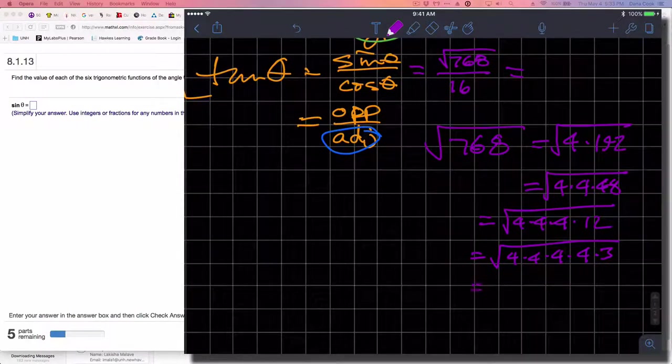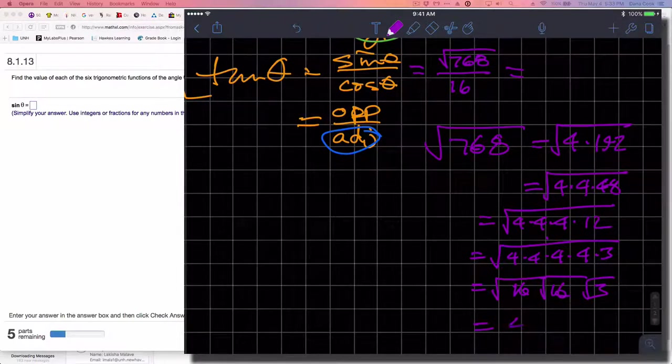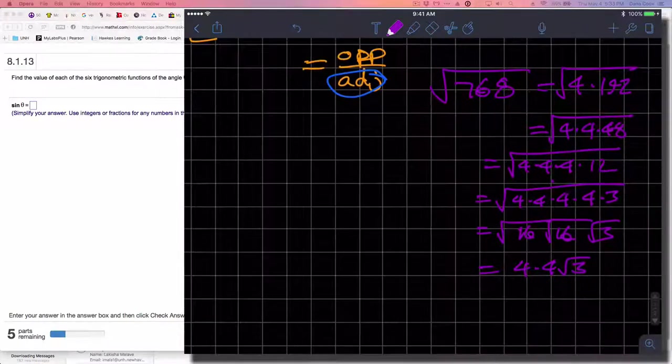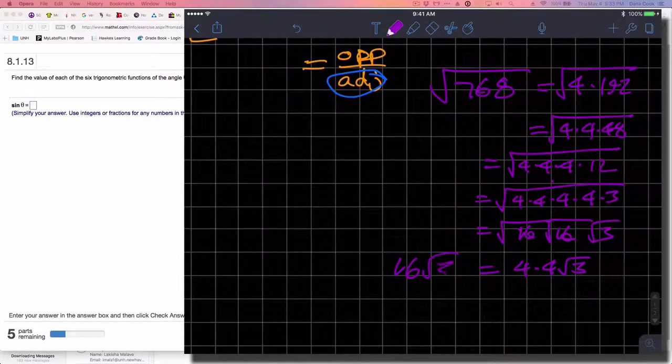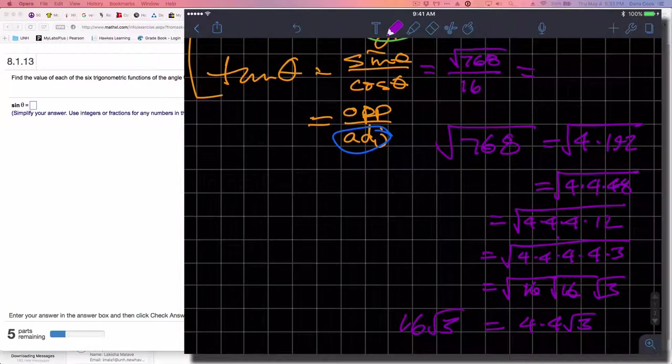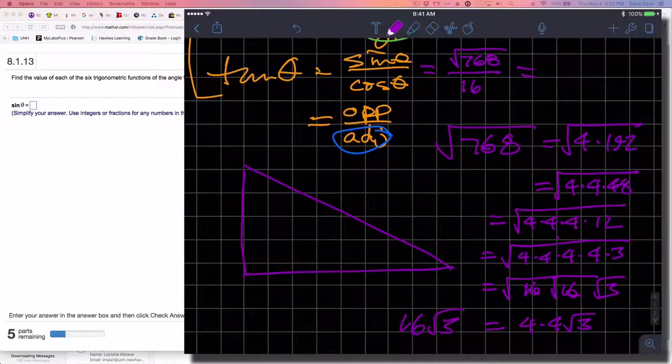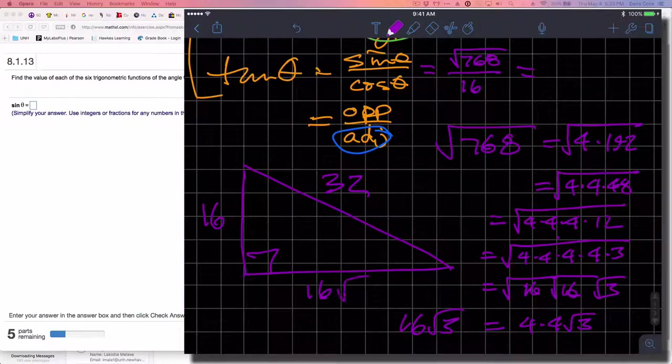This can be written as square root of 16 times square root of 16 times square root of 3. That's 4 times 4 times square root of 3, which is 16 times the square root of 3. Let's draw this triangle over again. We have 16, 32, and 16 times the square root of 3.